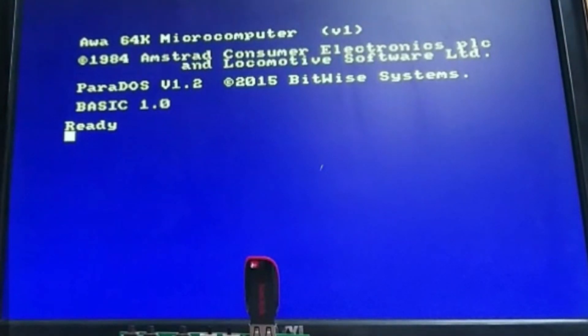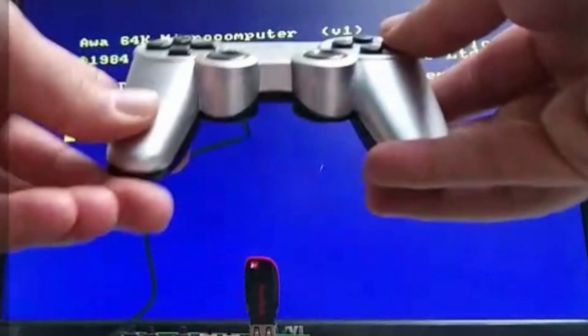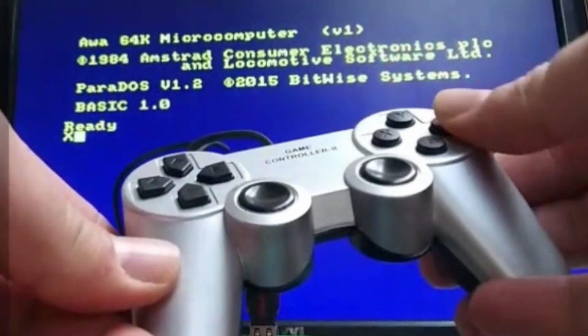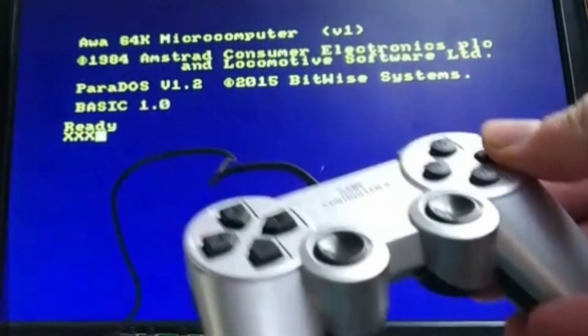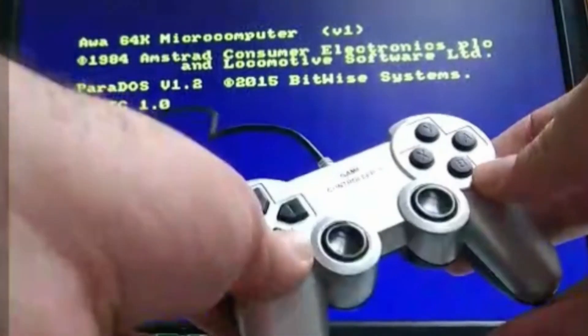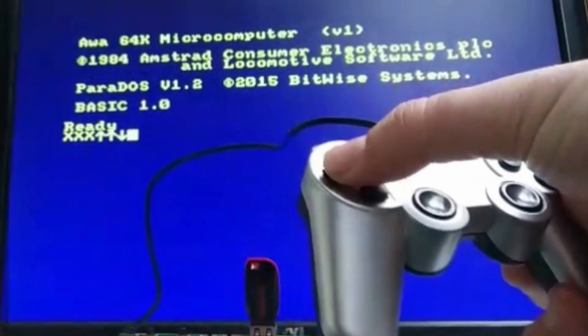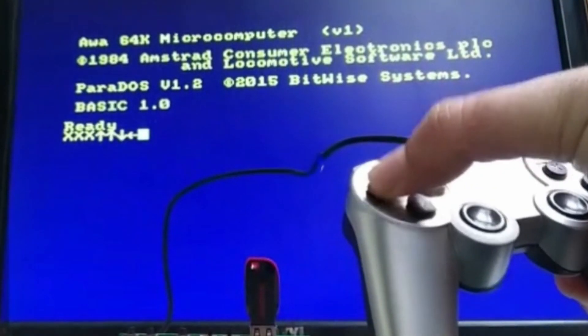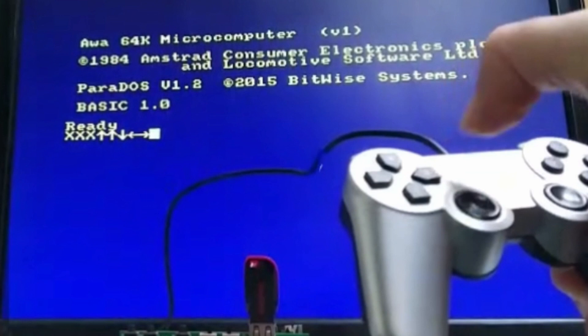Alright, I have the joystick connected. Let's test the unit out. Use my joystick, and if I press fire, get the X, and just make sure it works. Up, down, left, and right. That's all working.